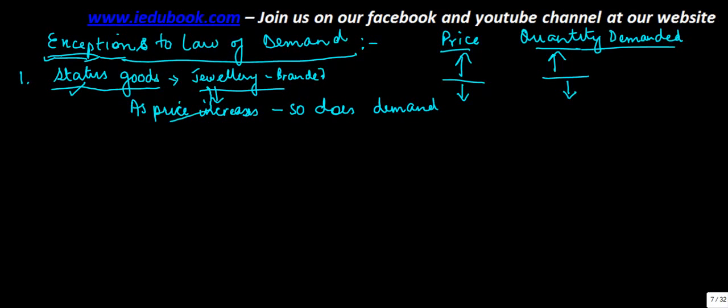Because if, let us say, a normal jewellery which is available at 20,000 may not be a status symbol. But if the same jewellery is available for 20 lakh, then it becomes a status good. So even though there was an increase in the price, the quantity demanded increases because now it became a symbol of status of the person.